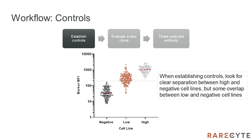The first step in creating your own assay is to determine appropriate control samples. For each biomarker, we recommend finding a high, a low, and a biomarker-negative cell line. Ideally, the high expressor should have clear separation above the negative cell line, and the low expressor should have some overlap with the negative. This will allow for better discrimination in performance for the rest of the workflow.